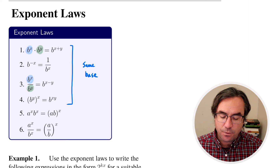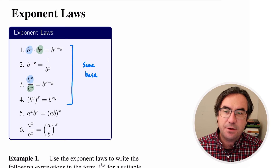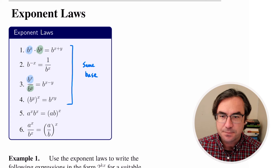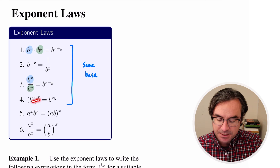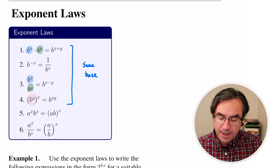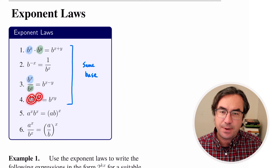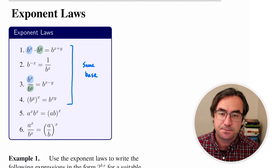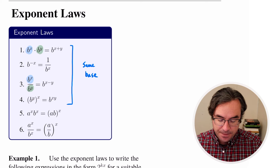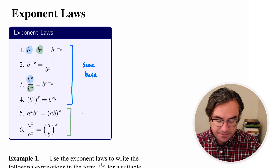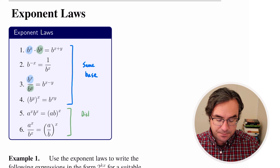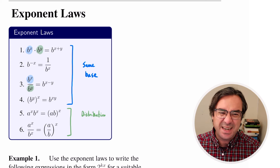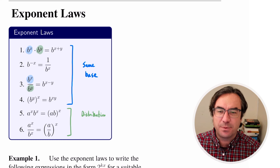If we have b raised to negative x, we can get rid of that negative by taking the reciprocal. And if we have multiple exponents — b raised to the power y, and then that whole thing raised to the power x — when we have multiple exponents, we just multiply the exponents together.